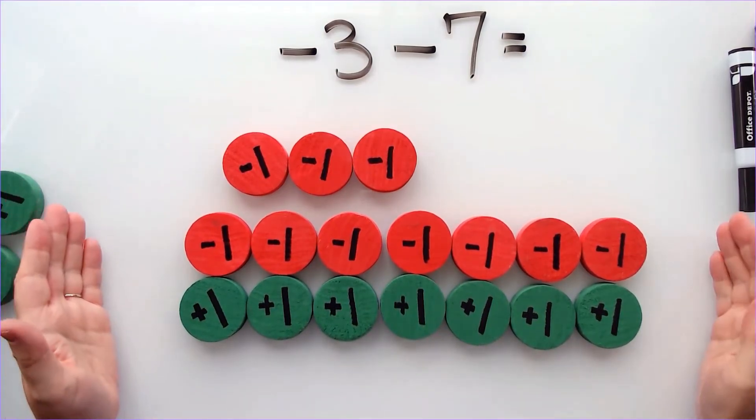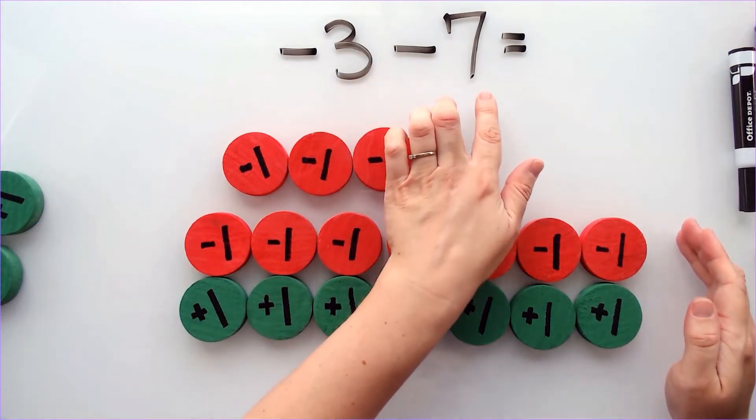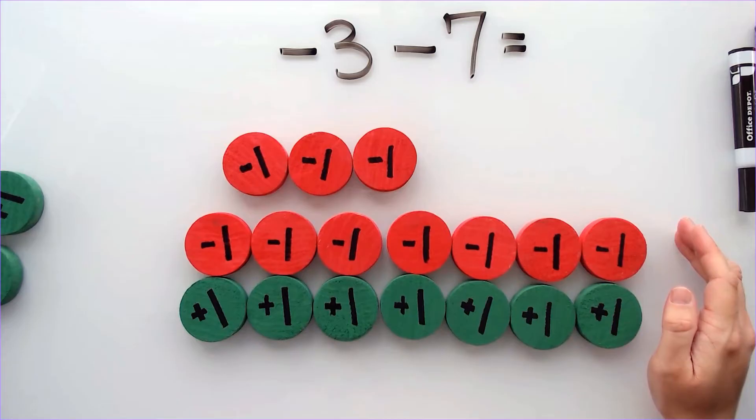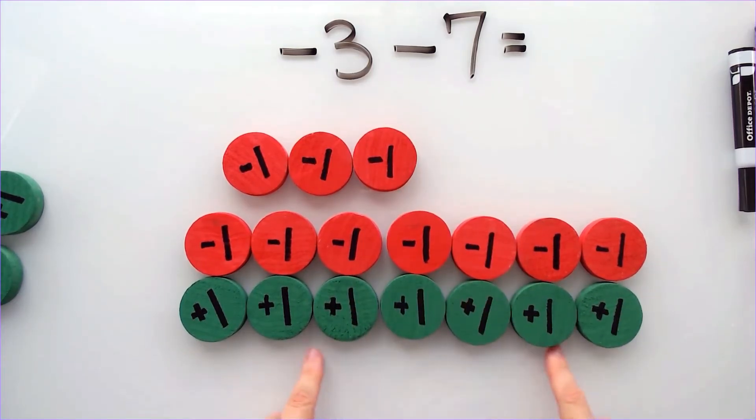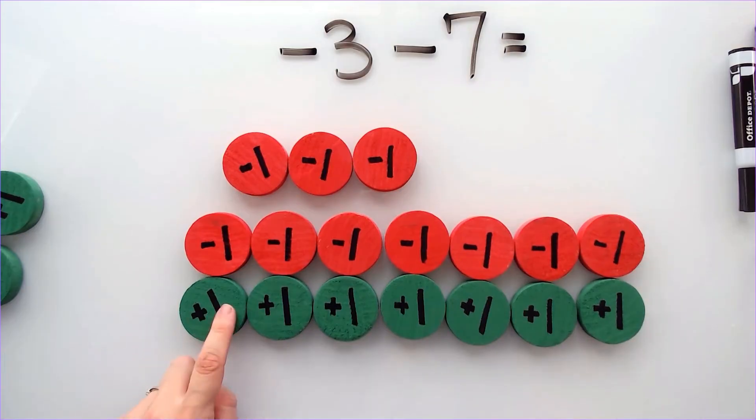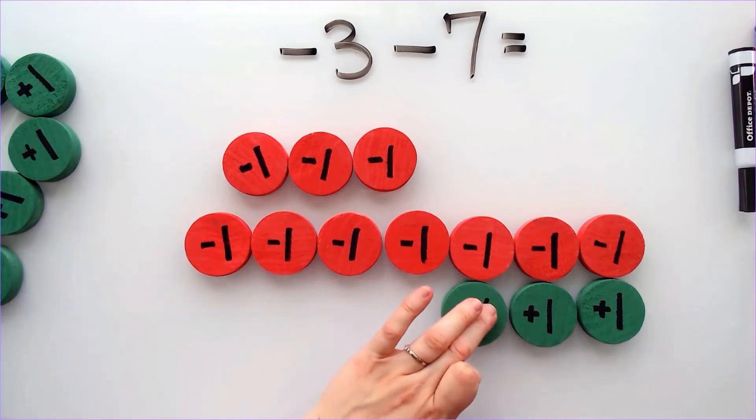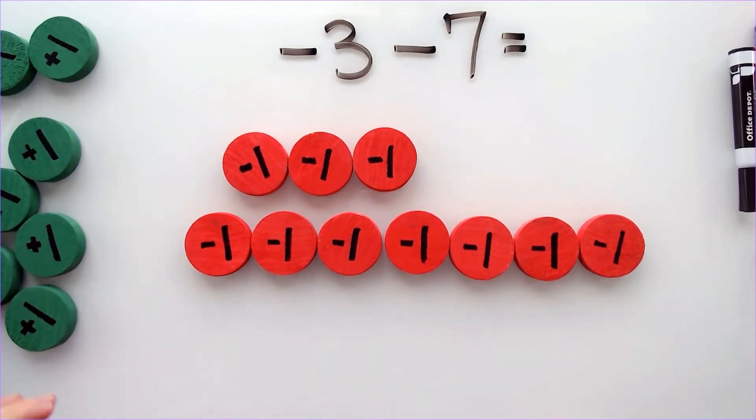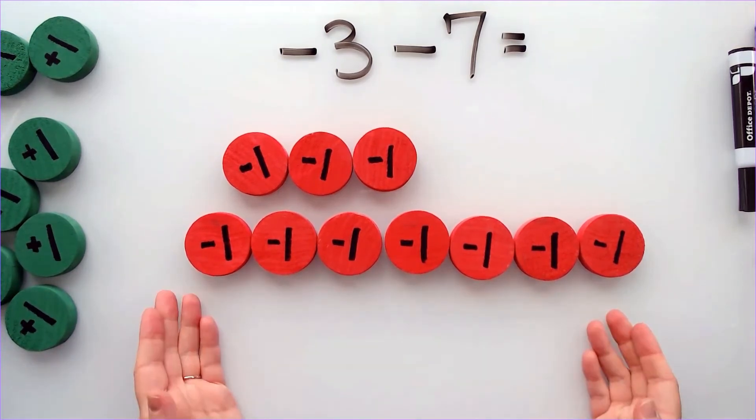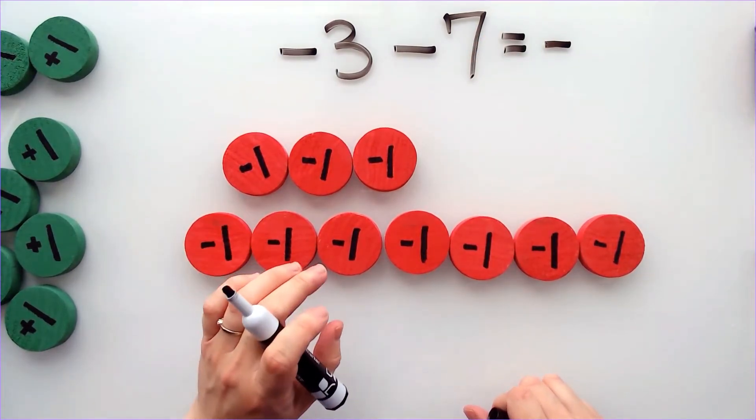Okay, now I have added everything that I needed to. And now I can take away 7 positives. So here's my 7 positives. I'm going to take these away. There's 1, 2, 3, 4, 5, 6, 7. And now I look at what I'm left with. I'm left with all negatives. So that tells me my answer is going to be negative. And I'm going to count them.